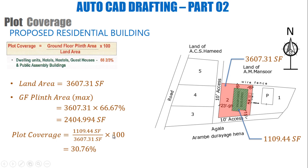Now if I calculate the plot coverage — plinth area divided by land area, multiplied by 100 — the plinth area is 1,109.44 and the land area is 3,607.31. The result is 30.76%. That means the plinth area covers 30.76% of the land area, which is less than the maximum 66.67% allowed by regulation.